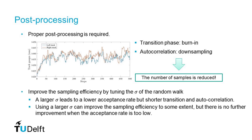The sampling efficiency can be improved by tuning the standard deviation sigma of the random walk. A larger sigma leads to a lower acceptance rate but shorter transitions and autocorrelation. Using a larger sigma can improve sampling efficiency to some extent, but there is no further improvement when the acceptance rate is too low.